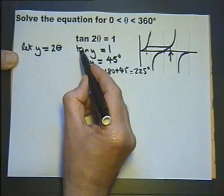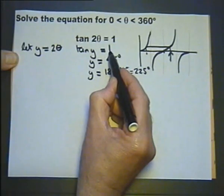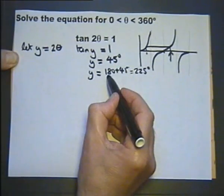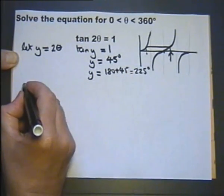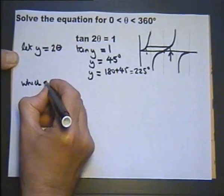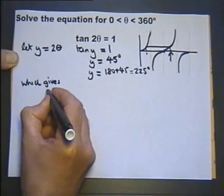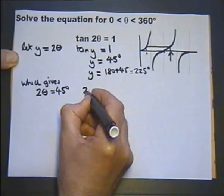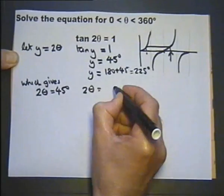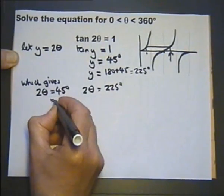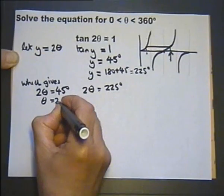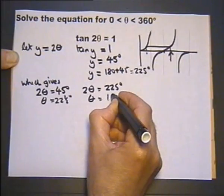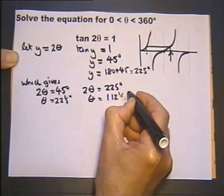So we've found the values of y for this equation. Substituting back the information that y actually equals 2 theta, we get 2 theta can equal 45 degrees or 2 theta could equal 225 degrees, which gives us theta equals 22.5 degrees and theta equals 112.5 degrees.